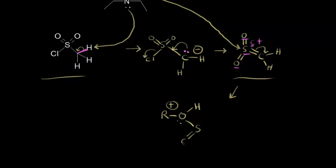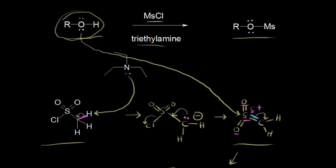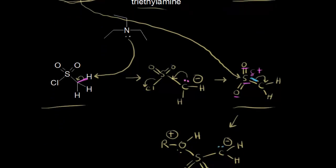The sulfur is double bonded to this oxygen, double bonded to this oxygen, and bonded to this carbon. This carbon has two hydrogens on it. It also has a lone pair of electrons, so that's a negative one formal charge. These electrons moved off onto the carbon to form our carbanion. We could identify the electrons on our alcohol too — these electrons on the oxygen are the ones that form the bond between the oxygen and the sulfur.